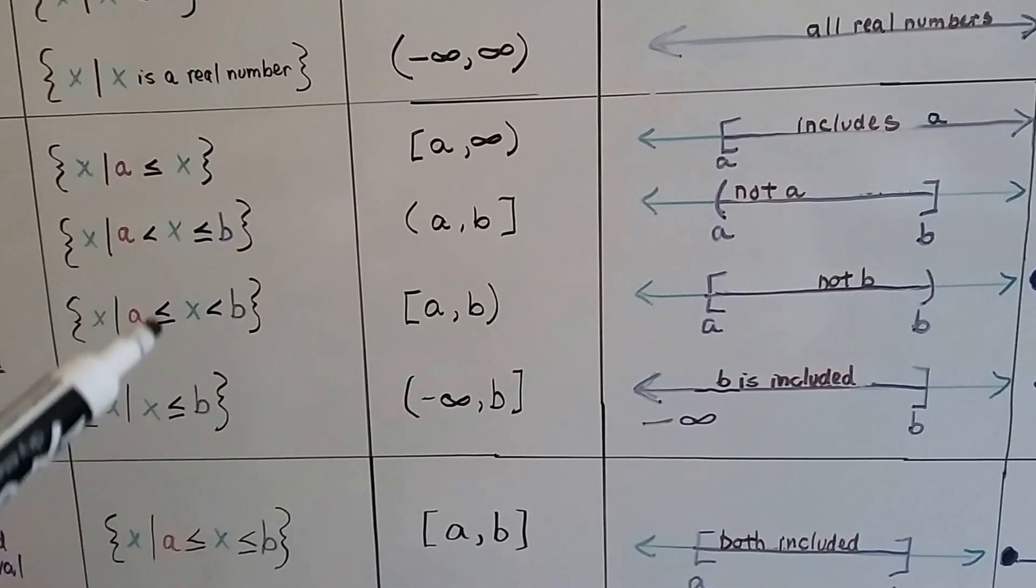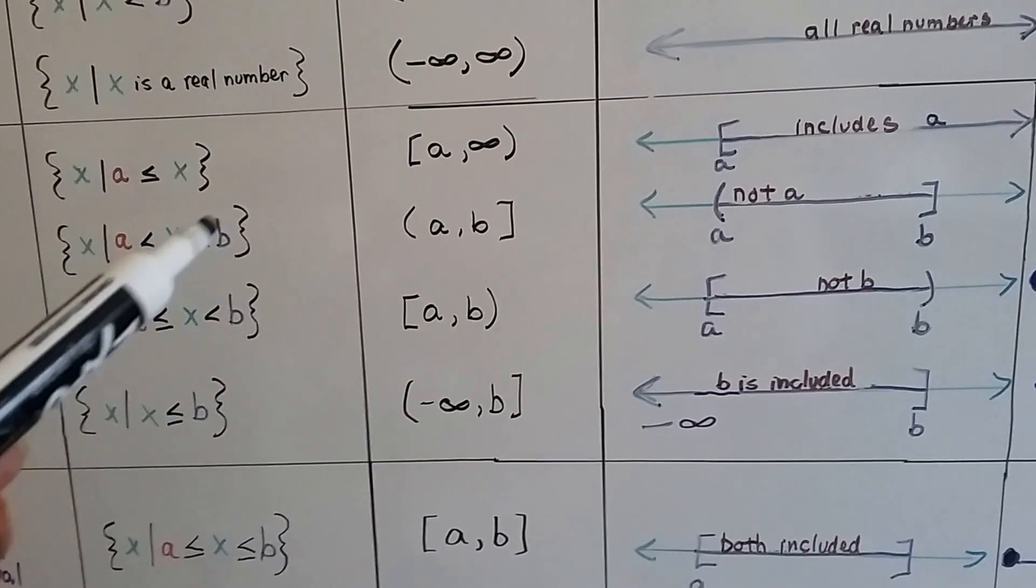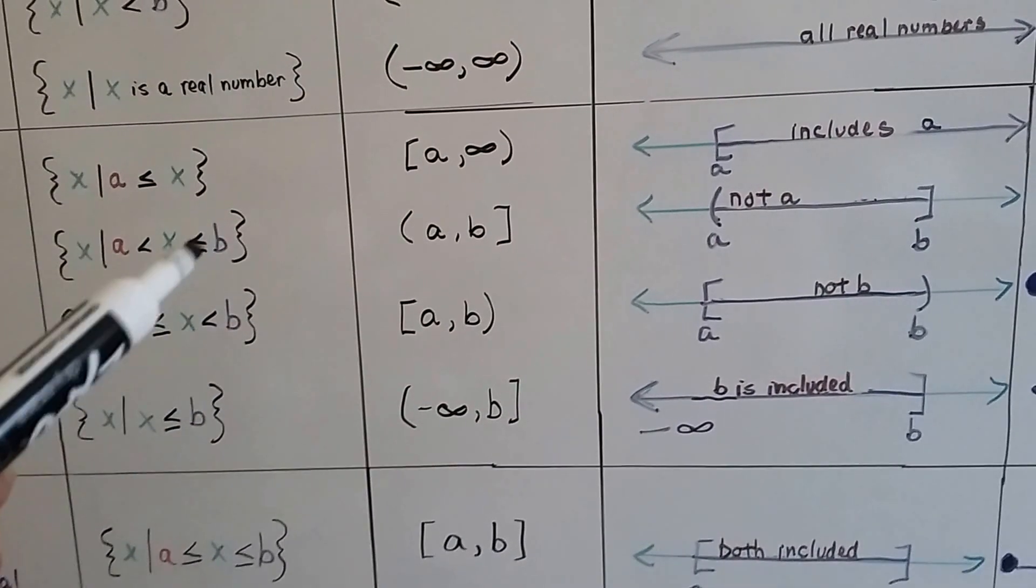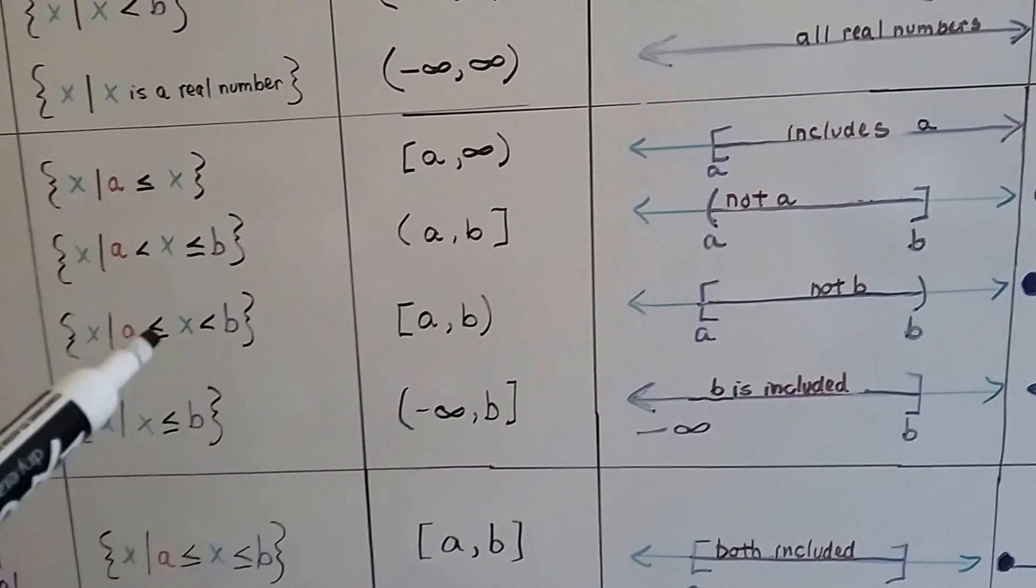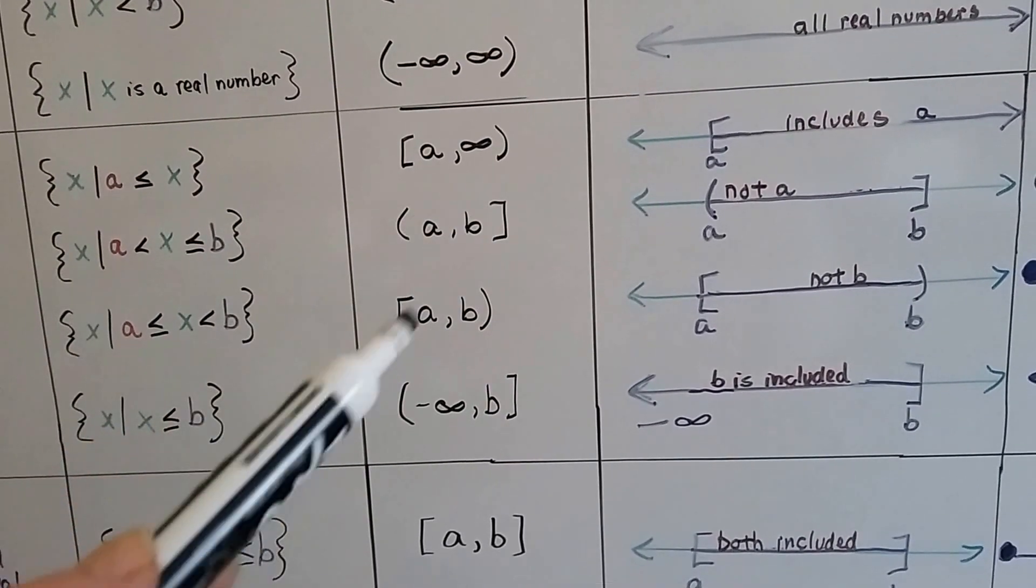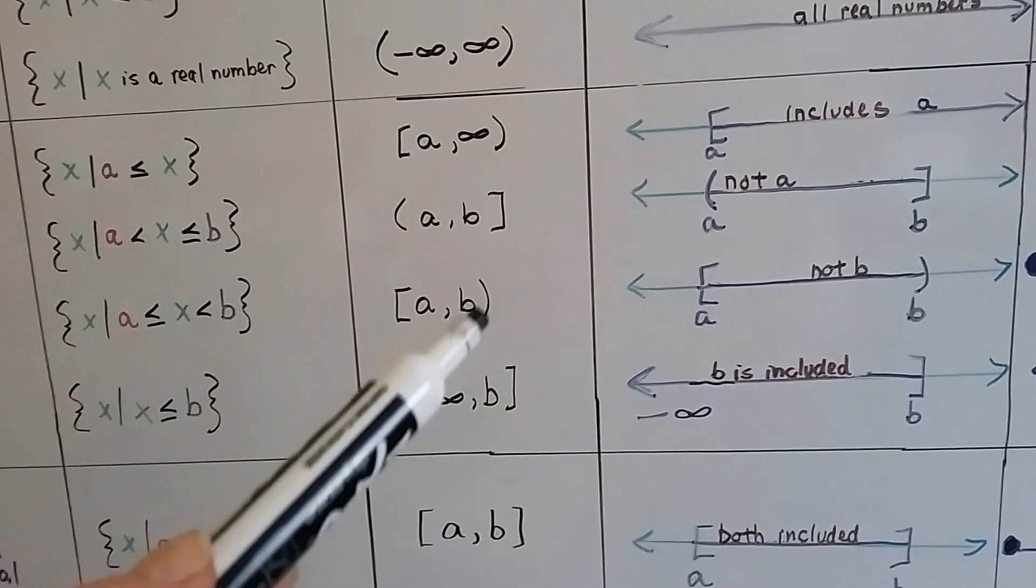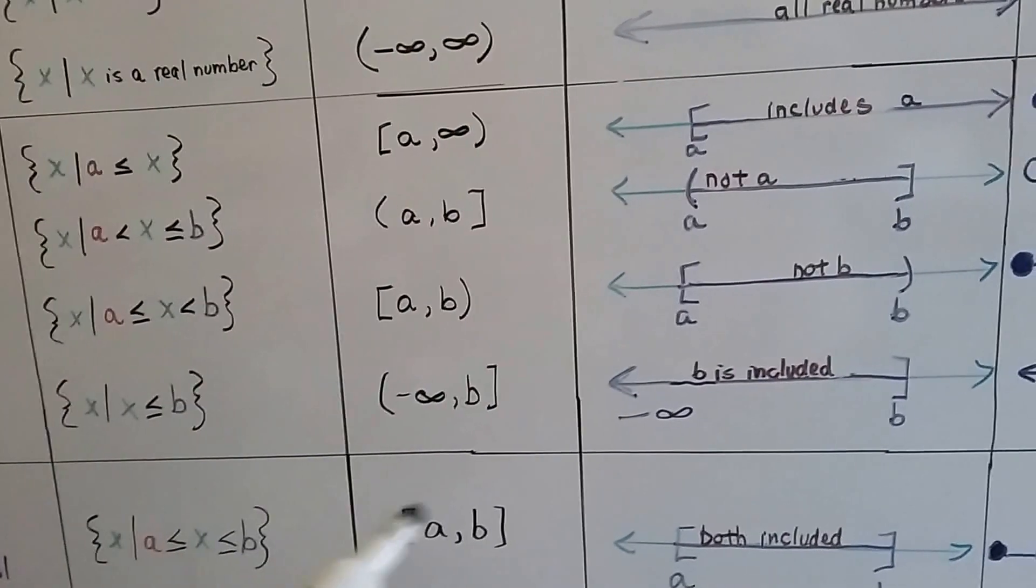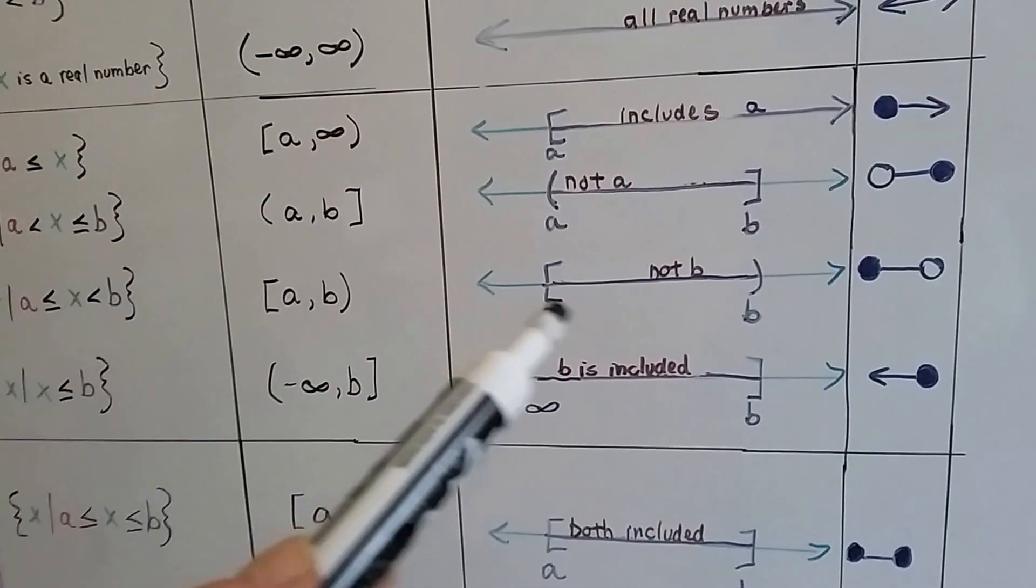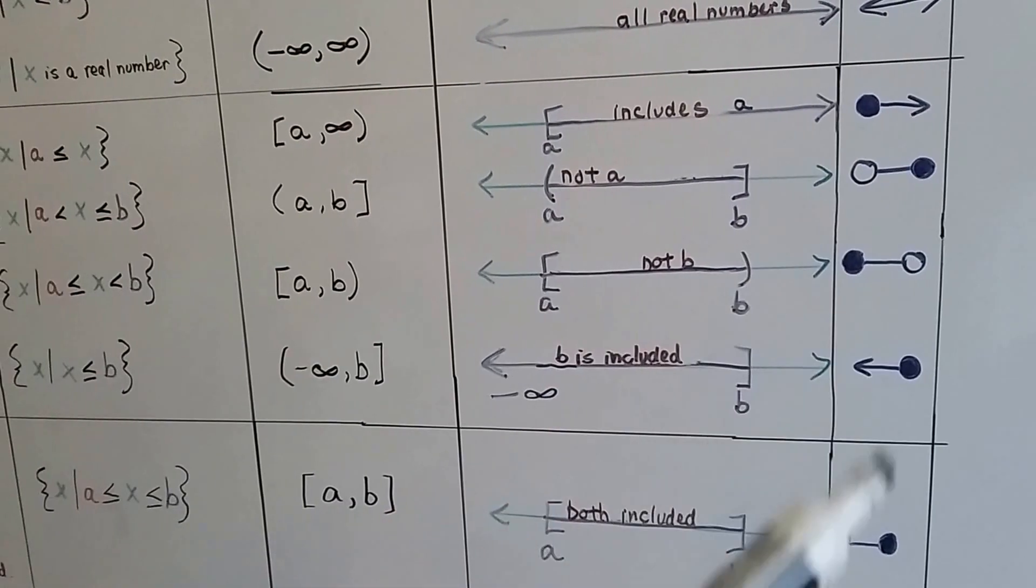Now, these signs have swapped places. The less than moved over here, and this sign moved over here. So, these switched sides, we had a parentheses over here and a bracket, and now we have a bracket and a parentheses. Because the signs switched. And that's how it would be graphed, and it would be the opposite of that one.